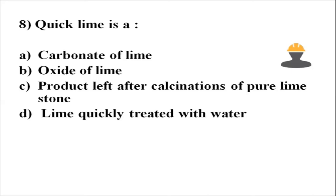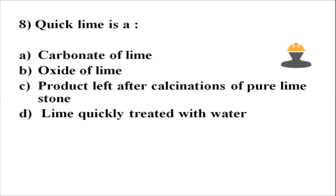Quick lime is defined as — Option A, carbonate of lime; Option B, oxide of lime; Option C, product left after calcination of pure limestone; Option D, lime quickly treated with water. Quick lime is calcium oxide. Option D refers to slaked lime. The correct answer is Option C: the product left after calcination of pure limestone.